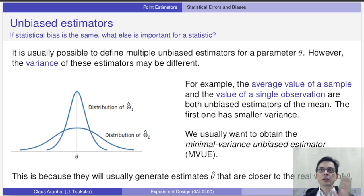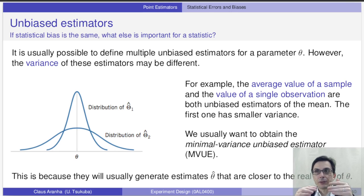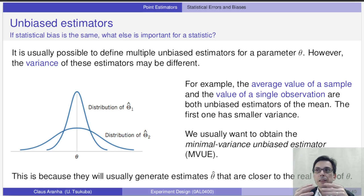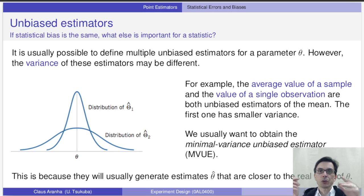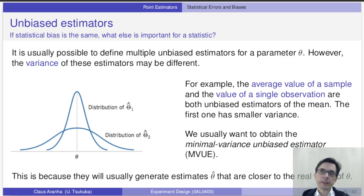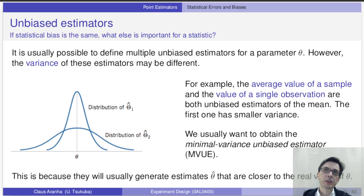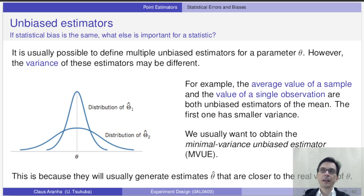If you think about it, it's not hard to define several unbiased estimators for a given parameter. For example, the average of 10 observations, the average of 20 observations, the average of 30 observations. Another unbiased estimator would be the maximum observation of a sample plus the minimum observation of a sample divided by 2. So with 10 students, we take the tallest one, the smallest one, and divide by 2 — that estimator will also be unbiased. Another unbiased estimator of the mean would be simply the value of one single observation.